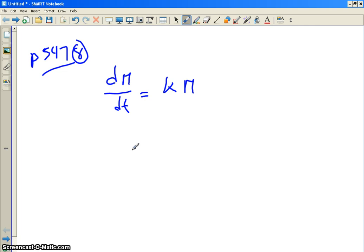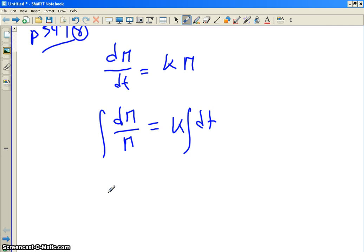All right, so separate. Go. Separate the M's from the T's. Those are the variables. What would you write? DM over M equals KDT. Can you integrate both sides now? Yeah, you can. So what do you get? LN absolute M equals KT plus some constant. Right, okay. All righty.